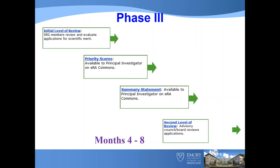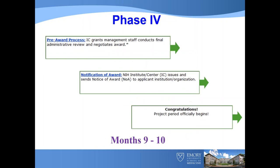That first level of review — the scientific review — has nothing to do with funding. When we score applications at that level, we are not told what the funding line is. We are told: you are judging the science, not the fundability. A lot of people don't understand that and get upset at the reviewers, but it's actually at that second level of review where the funding decisions are made.